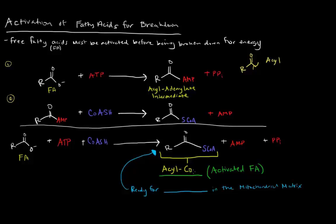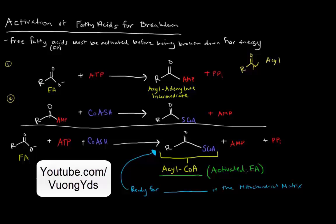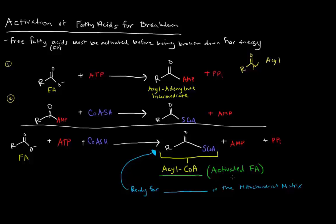This acyl-CoA is essentially the activated fatty acid — very similar to the pyruvate dehydrogenase step in which we take a pyruvate and turn it into an acetyl-CoA. Acetyl-CoA is activated for the Krebs cycle. This acyl-CoA is an activated fatty acid, ready to be broken down specifically via beta oxidation in the mitochondrial matrix. Beta oxidation is the degradation process for fatty acids.